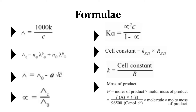The next formula is lambda equal to lambda-not minus A times the square root of c. Lambda is molar conductivity, lambda-not is molar conductivity at zero concentration or infinite dilution, A is a constant, and c is the concentration.